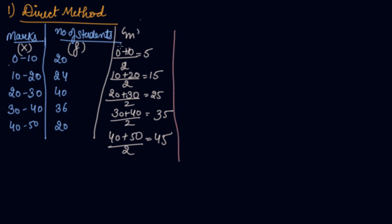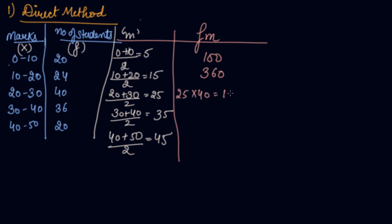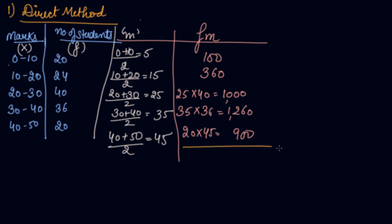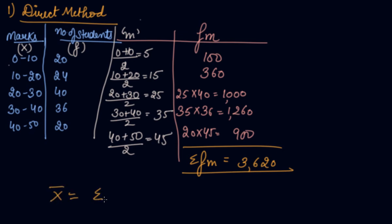Now multiply each mid-value by its frequency: 5×20 = 100, 15×24 = 360, 25×40 = 1000, 35×36 = 1260, and 45×20 = 900. Then take the summation of fm, which equals 3620. The total frequency Σf is 20 + 24 + 40 + 36 + 20 = 140.